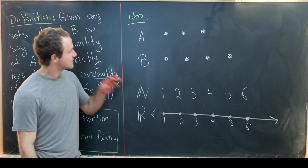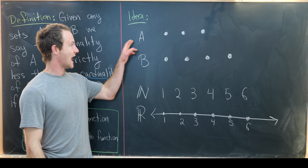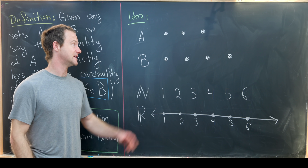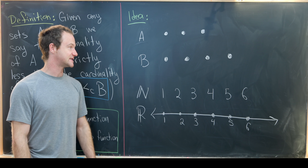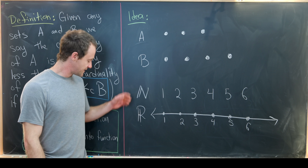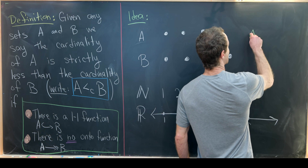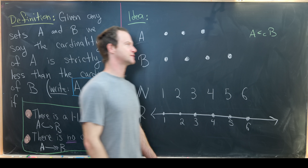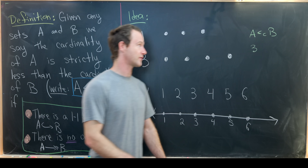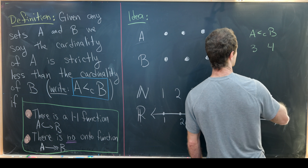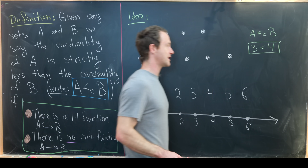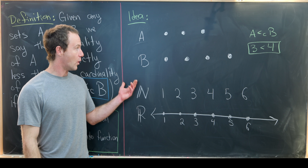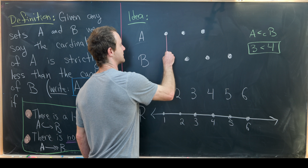Let's look at some basic examples. Let's say we've got set A and set B. A is just a set of three dots — you could think of them as the numbers 1, 2, 3 or the letters A, B, C. And then B is a set of four dots. We can all immediately agree that the size of A should be less in cardinality than the size of B, because we could assign the number 3 to the size of A and 4 to the size of B, and 3 is less than 4. Furthermore, we can exhibit a one-to-one function from A to B pretty easily.